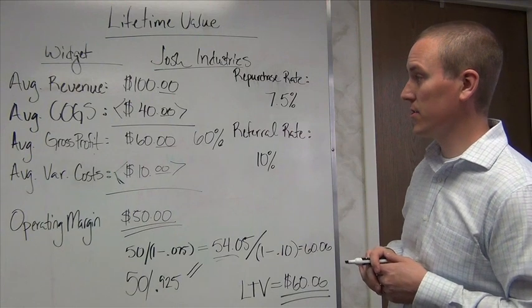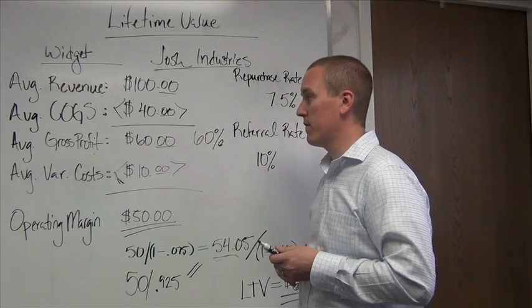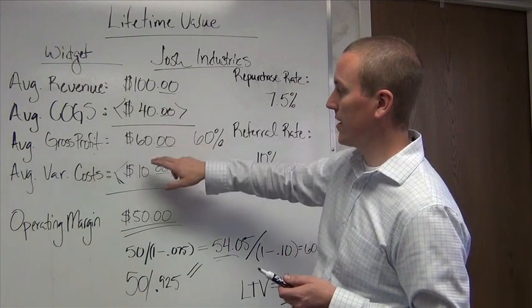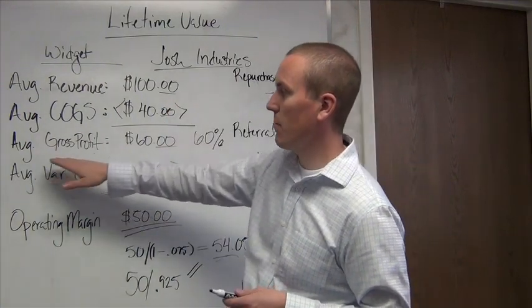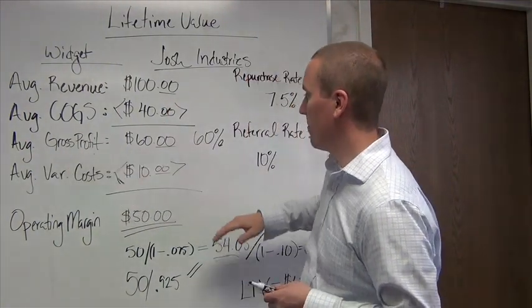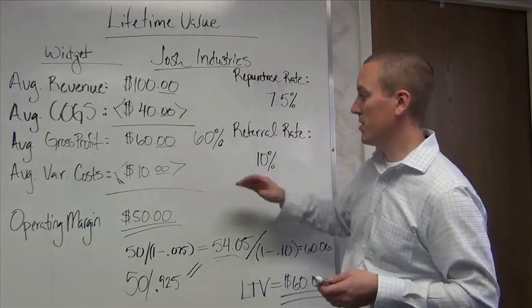Our average cost of goods sold is $40. If I take the $40 from $100, I get $60, and that gives me my average gross profit, and that means that my gross profit margin is 60%.